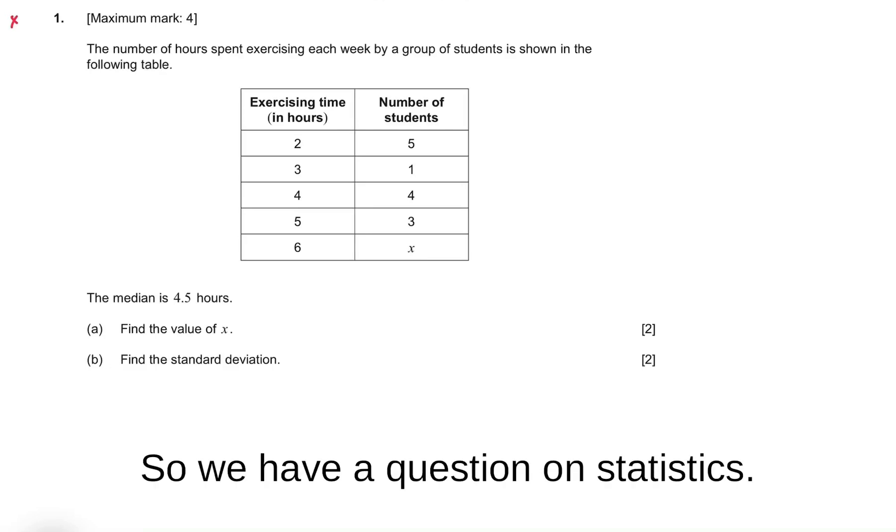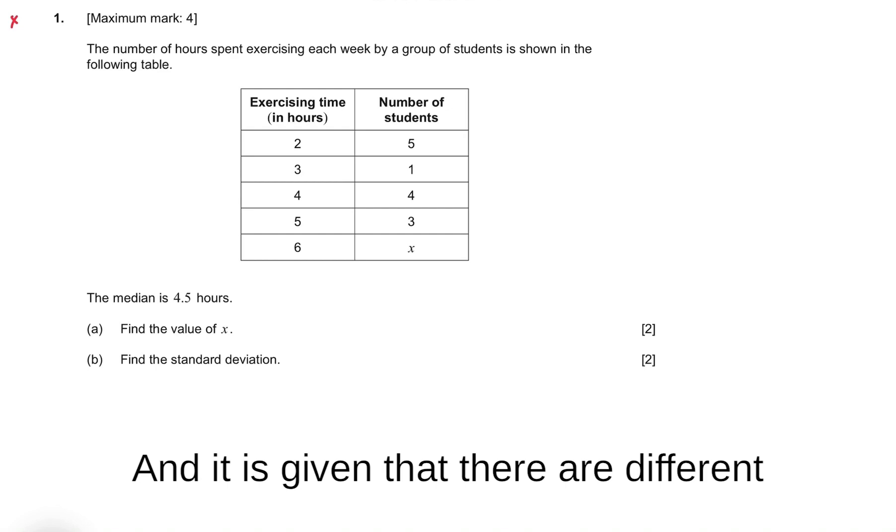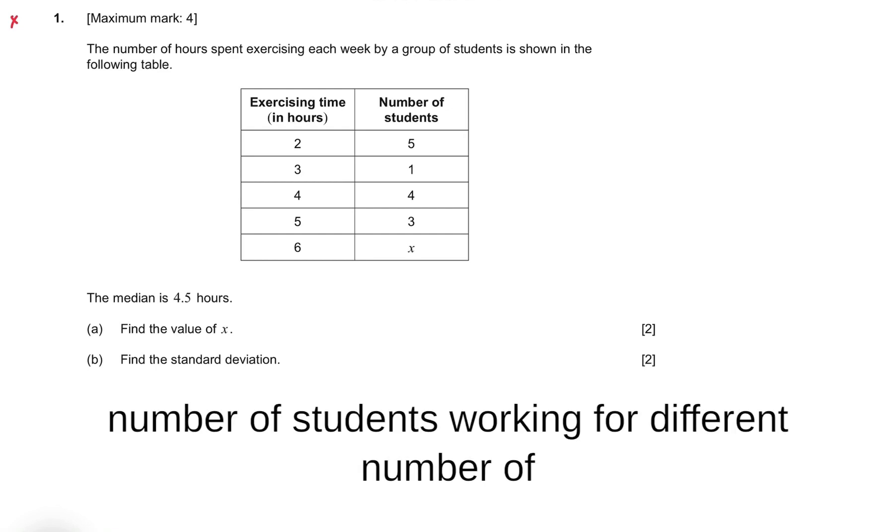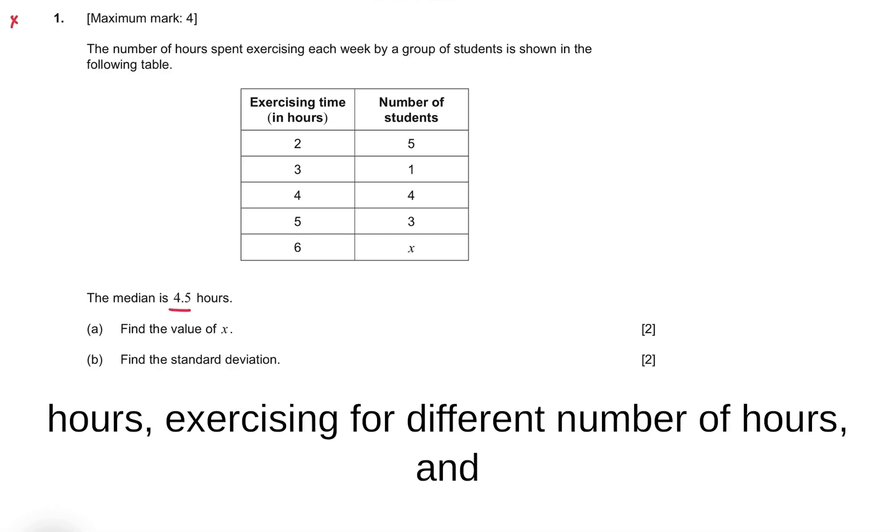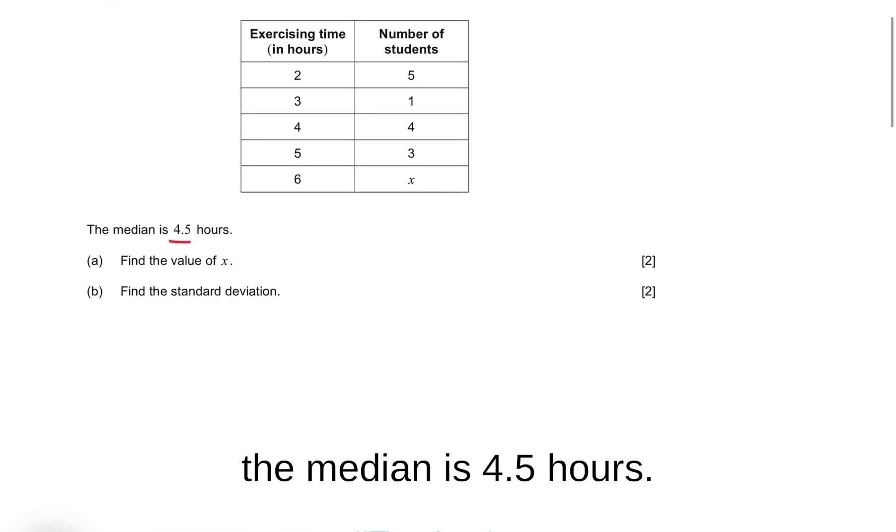Hello friends, we have a question on statistics. There are different numbers of students exercising for different numbers of hours, and the median is 4.5 hours.